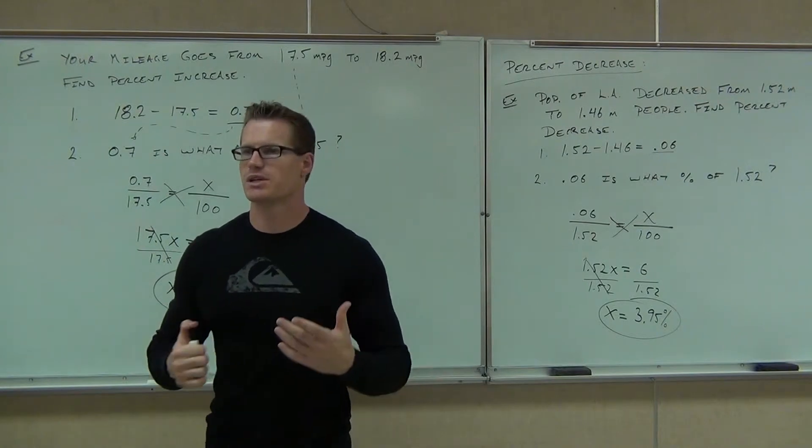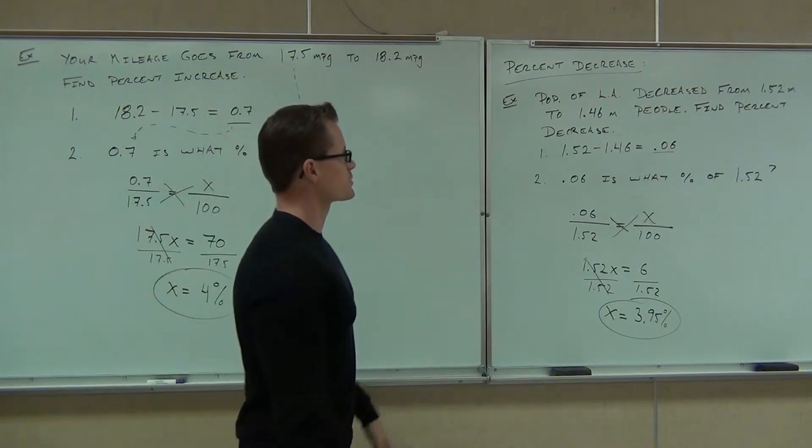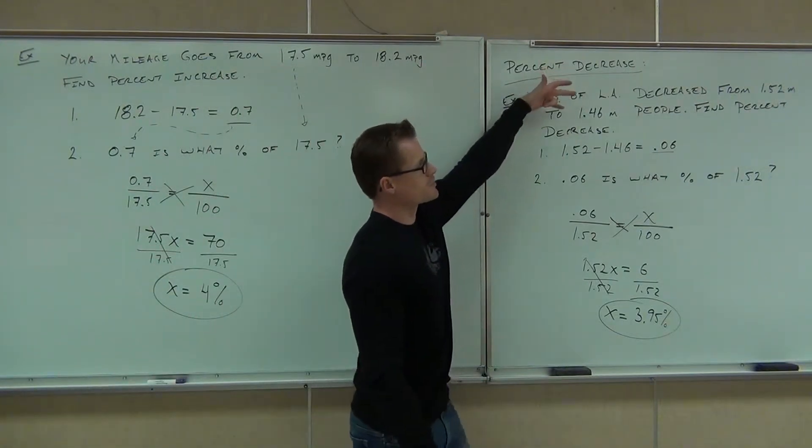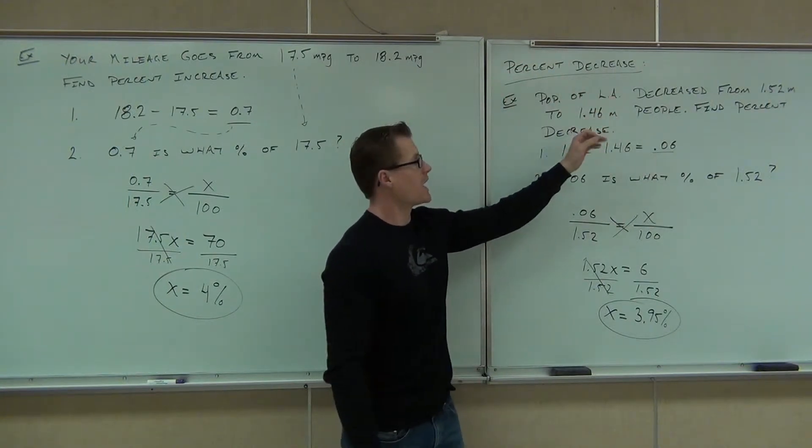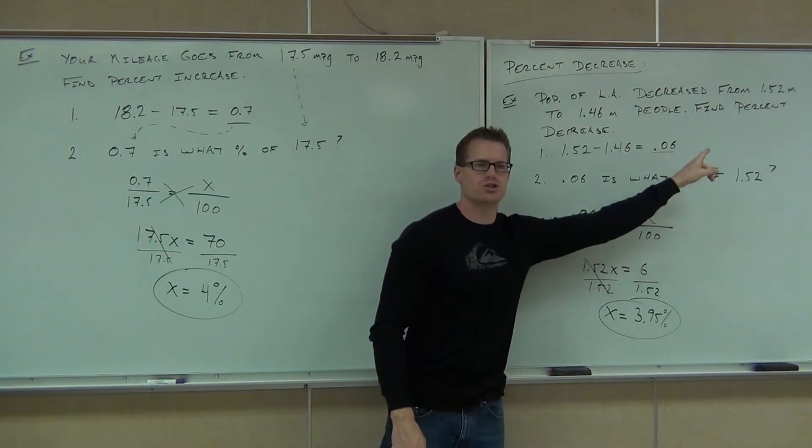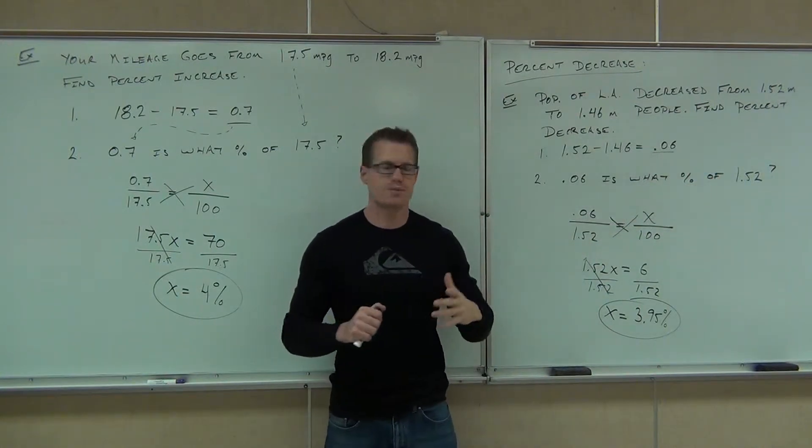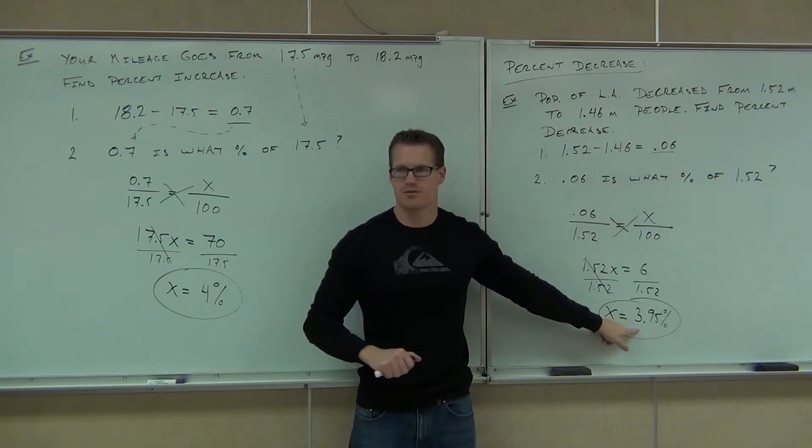So here's the interpretation. Interpretation is if your population decreased from 1.52 million to 1.46 million and you find the difference between them and you set up your percent equation based on what you started with, that population dropped effectively 3.95%.